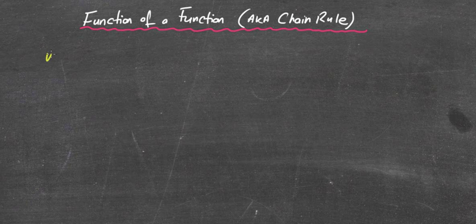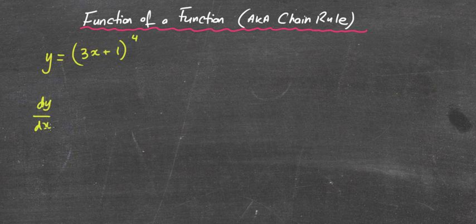To introduce this, I will just refresh ourselves on the chain rule with differentiation. So we're going to look at the question 3x plus 1 to the power of 4. So we looked at this question and you're asked to find dy/dx for whatever purpose I'd ask you to find it. If it was to the power of 2, we might get away with expanding the brackets, but to the power of 4, it's just too difficult.